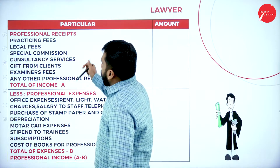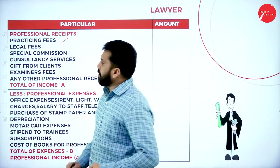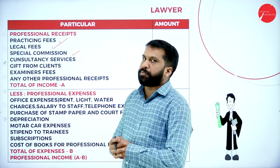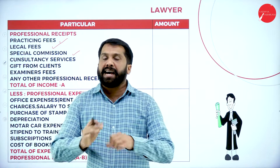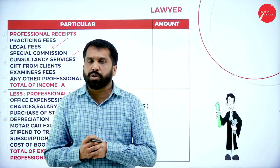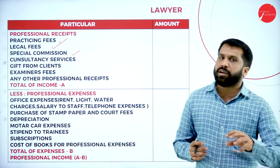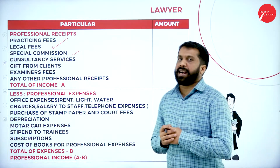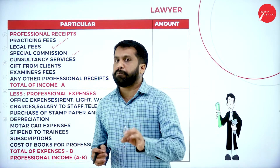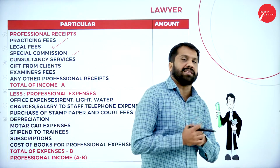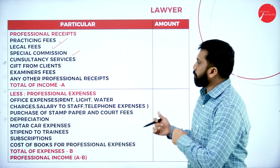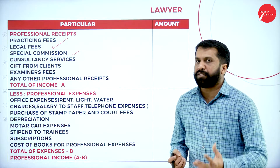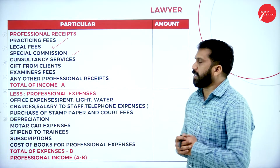What is special commission for a lawyer? For example, your client has a land dispute — the land value is one crore. You fight in court and your client wins. The client had promised to give you 10% of the land value if you win. That 10% — which is ₹10 lakh — will be the commission of that lawyer. This is professional income because of his professional effort and skill in winning the case.